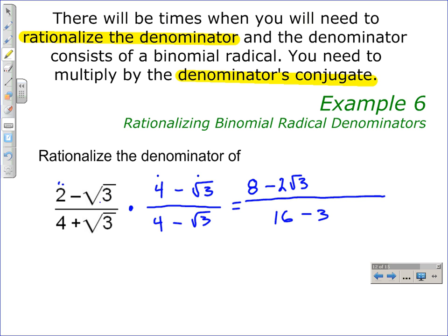Then we multiply minus square root of 3 by 4 to give us minus 4 square roots of 3. And lastly, we multiply minus the square root of 3 times minus the square root of 3 to get plus 3. Minus times minus is a positive.